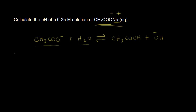Let's write our initial concentrations. Our goal is to calculate the pH of our solution. We're starting with a 0.25 molar concentration of sodium acetate, which is the same concentration of our acetate anion. We write 0.25 molar for the initial concentration of the acetate anion. If we pretend like nothing has reacted, we have zero concentration for both of our products.